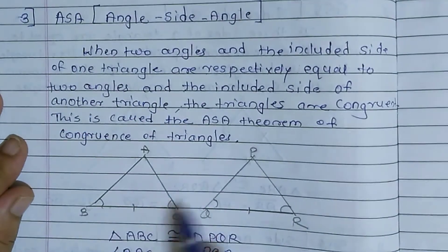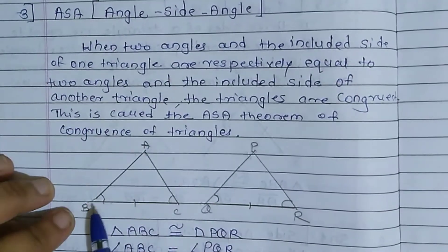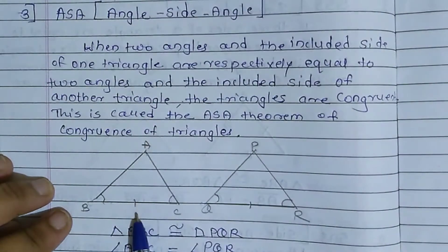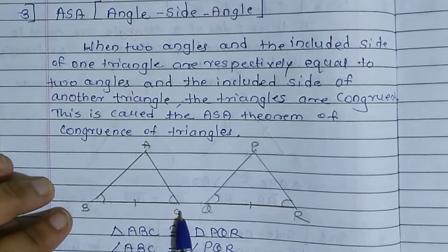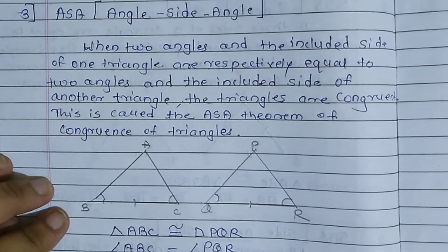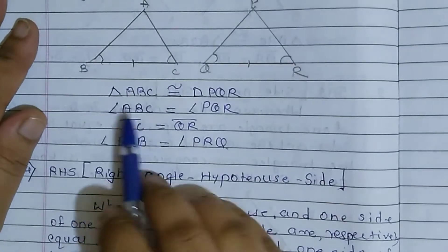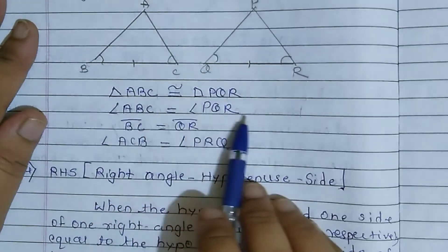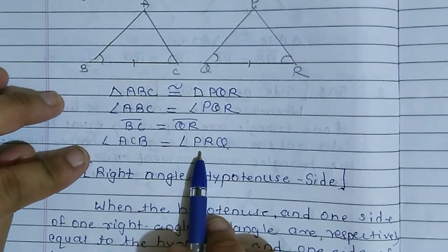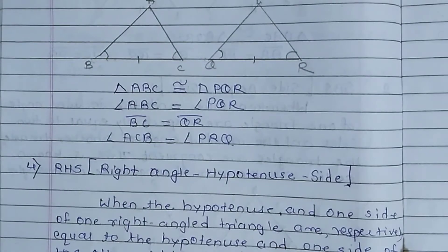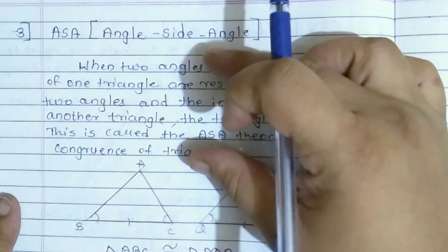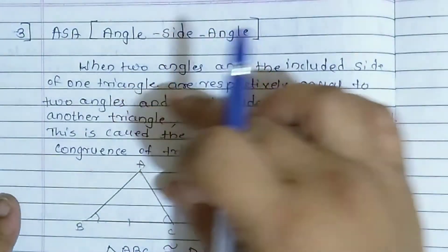According to this theorem, these two triangles are congruent when angle B equals angle Q, side BC equals side QR, and angle C equals angle R. Then only the two triangles are congruent. यहाँ पे triangle ABC congruent to triangle PQR — angle ABC equals angle PQR, BC equals QR, and angle ACB equals angle PRQ. Exercise 7.2 solve करने पर आपको और easily समझ में आएगा।